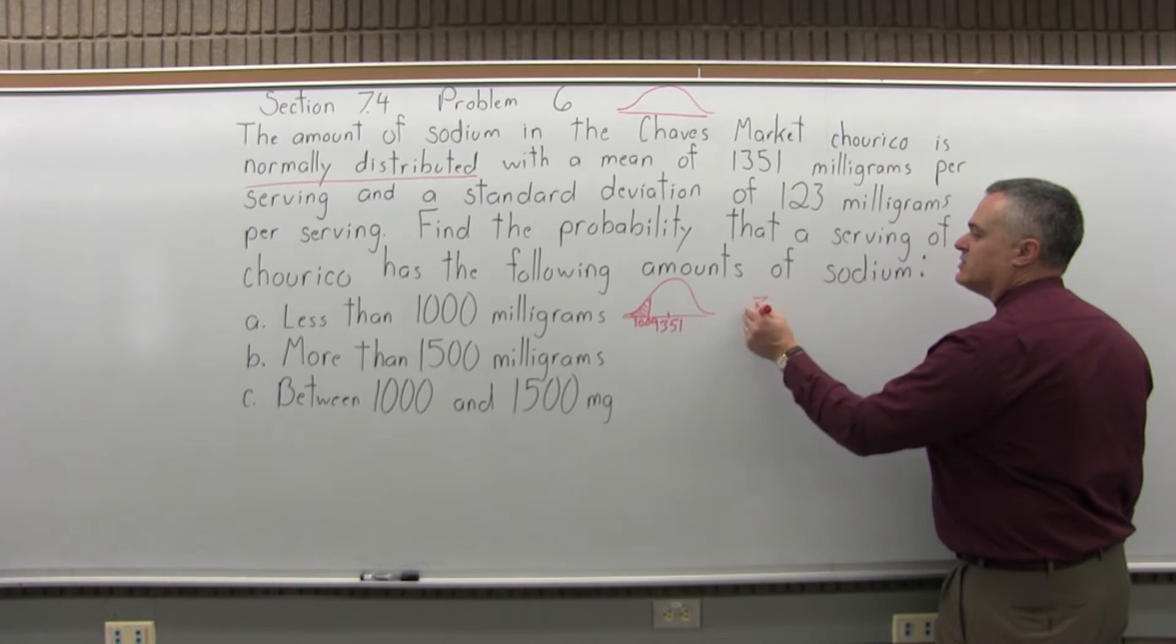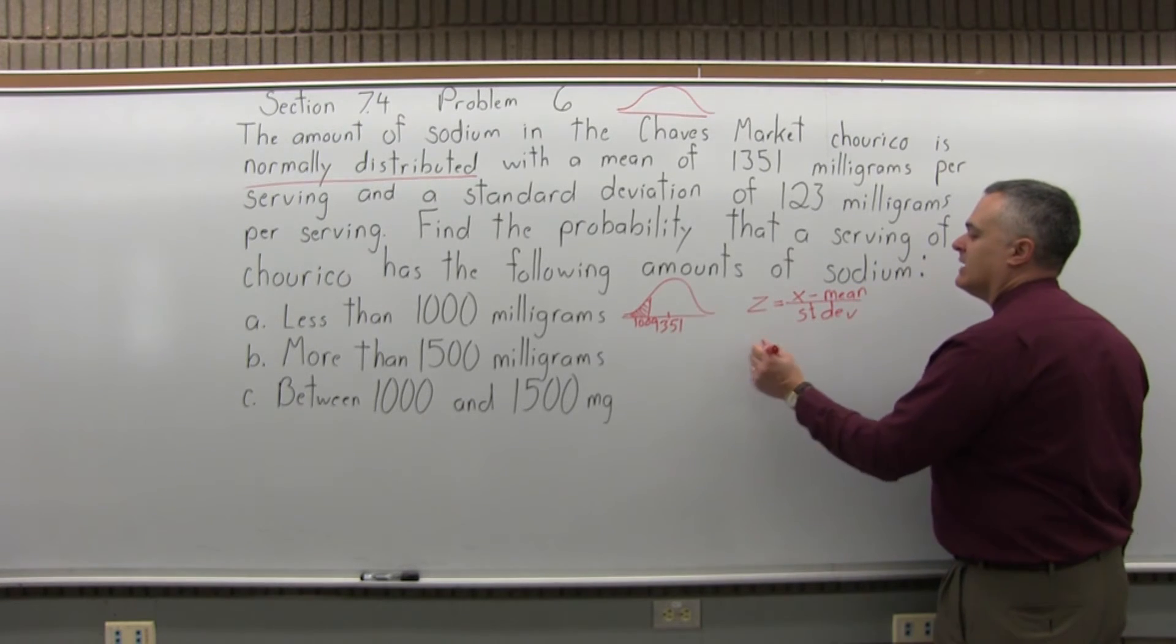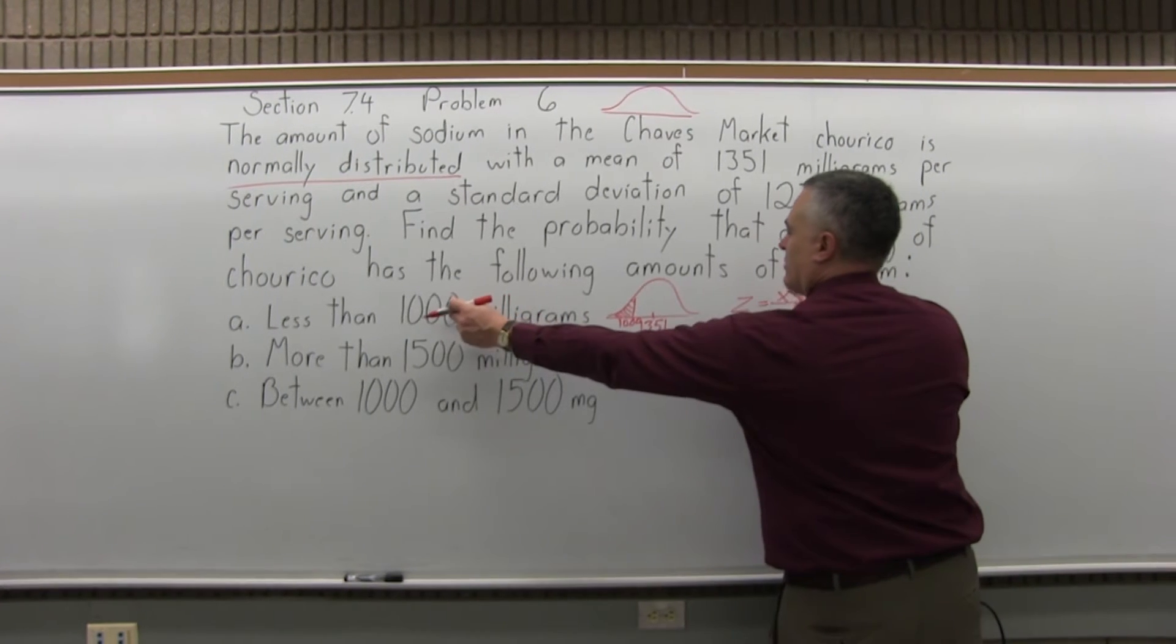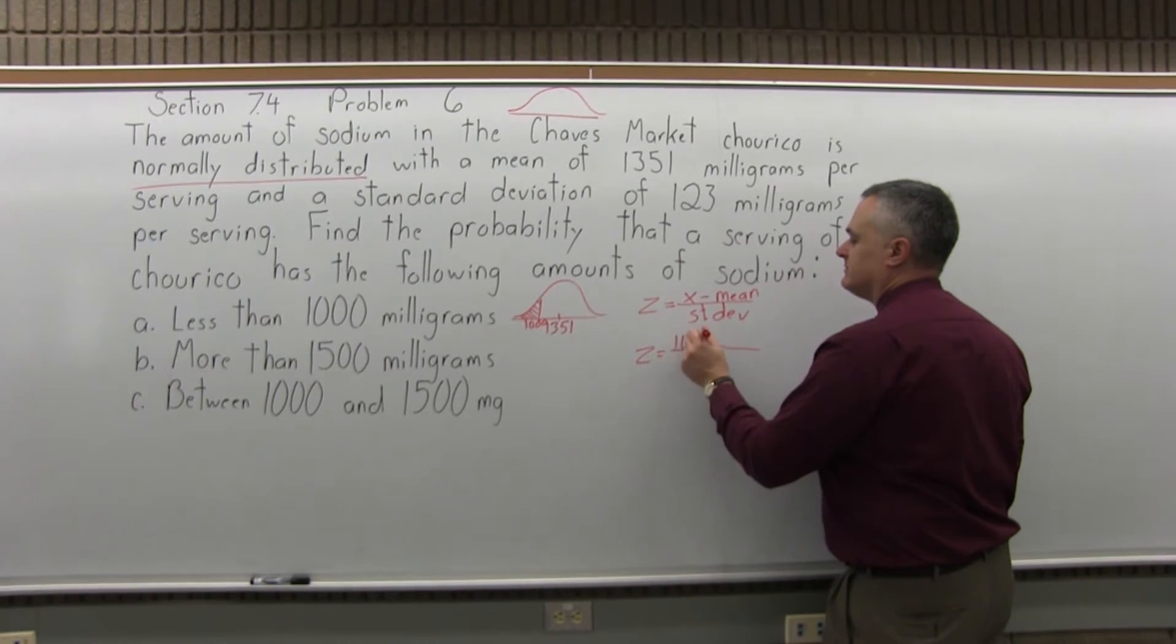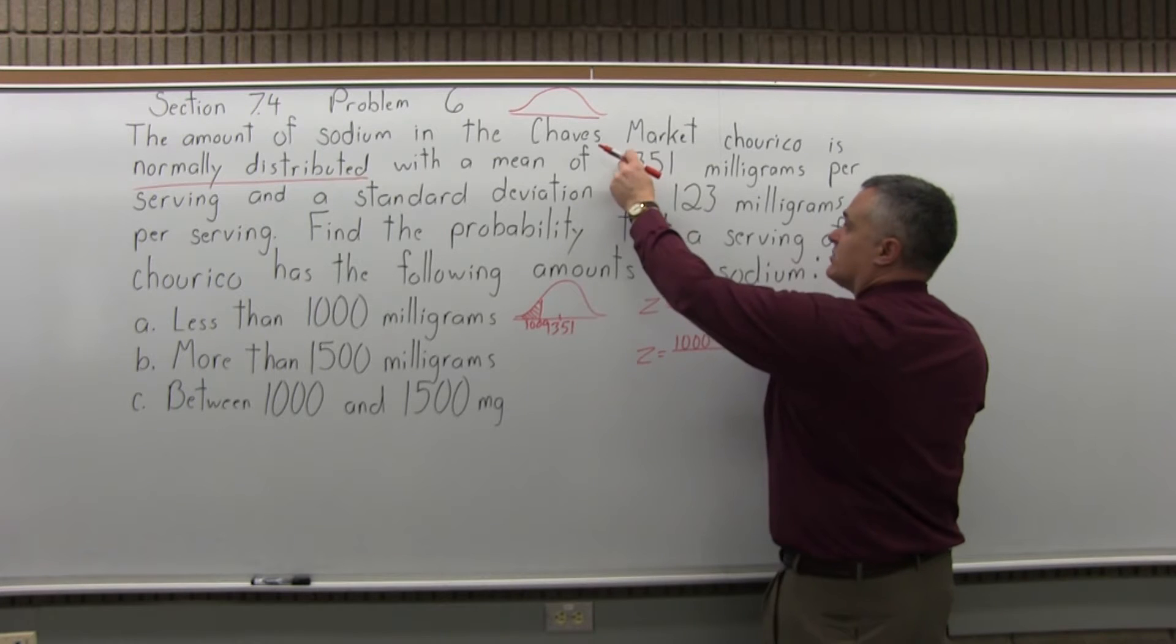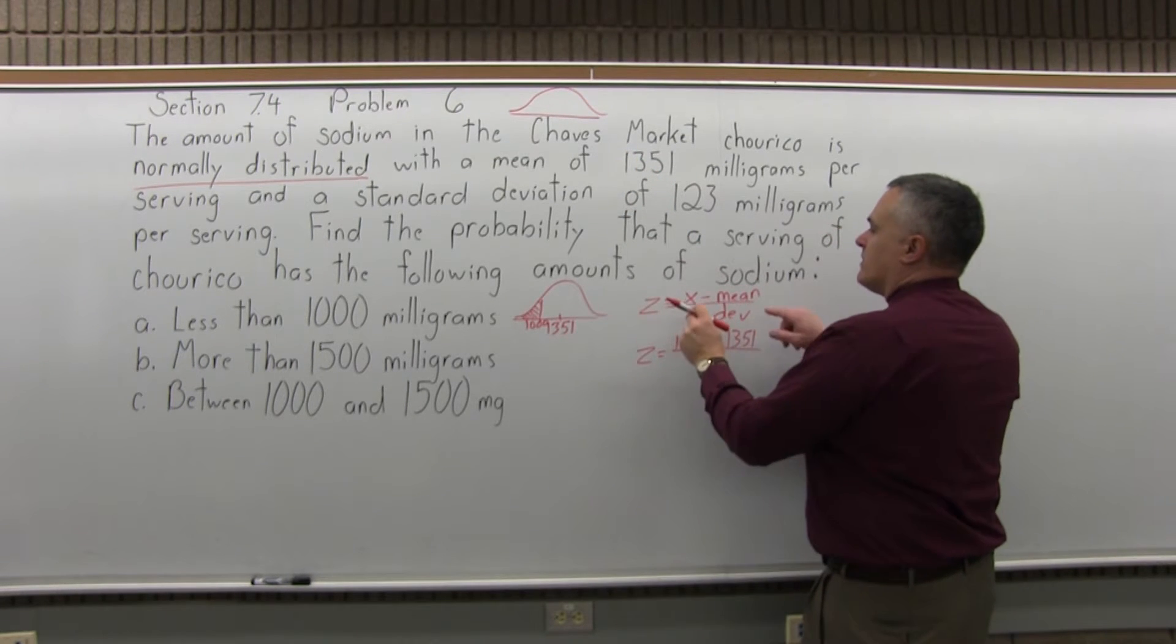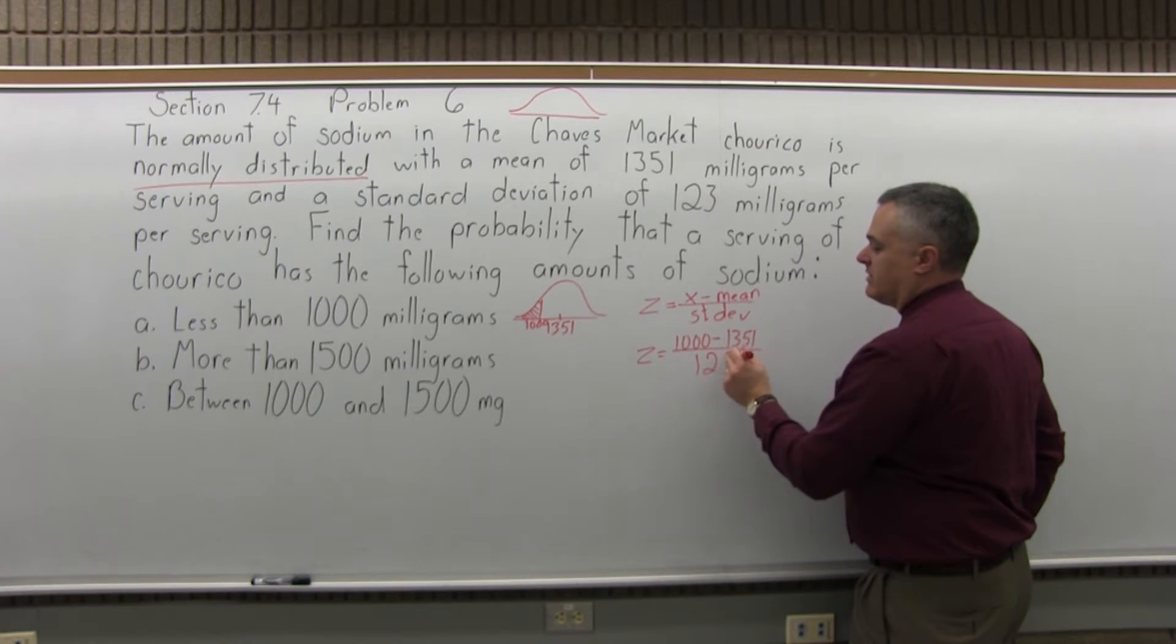We'll need the Z-score formula: Z equals X minus the mean over the standard deviation. For this particular problem, the X, the number we want to find the Z-score for, is 1,000 minus the mean, which is given as 1,351, over the standard deviation, which is given as 123.